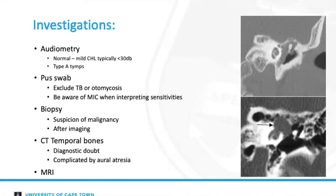The main utility of a pus swab in context is to exclude TB and otomycosis, which may mimic the condition. When using bacterial MC&S, one must be cognizant that most labs base the resistance profile on the minimum inhibitory concentration that systemic antibiotics will achieve in the serum.